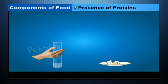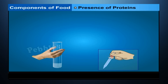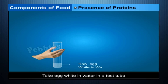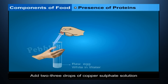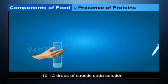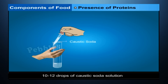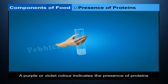Presence of Proteins — Materials required: You need raw egg white or any other protein sample, copper sulfate (blue vitriol) solution, caustic soda and a test tube. Take egg white in water in a test tube. Add 2–3 drops of copper sulfate solution and 10–12 drops of caustic soda solution. Shake well. A purple or violet colour indicates the presence of proteins in the given sample.